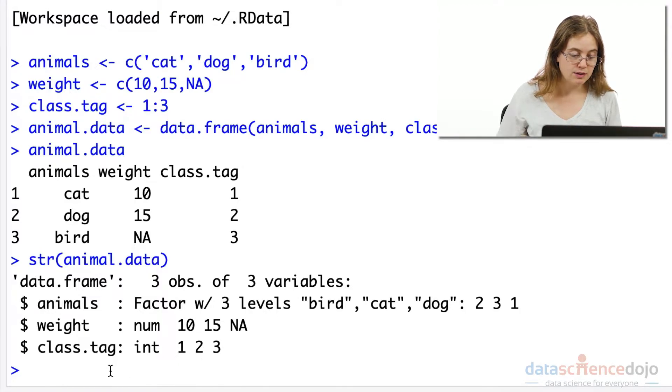We can simply do this using the as.factor function or the factor function in R. We're going to override the numeric class tag vector and treat it as a factor in our animal data set.